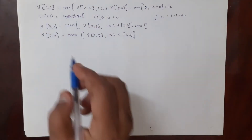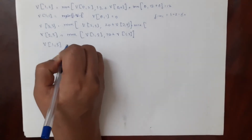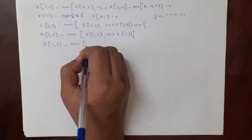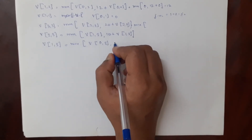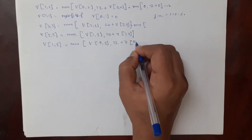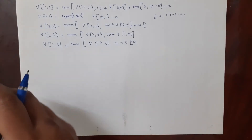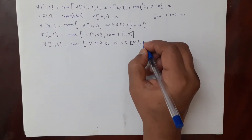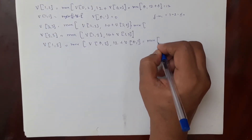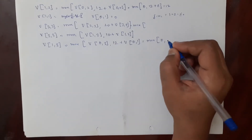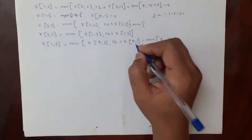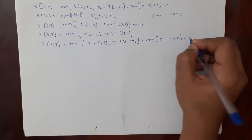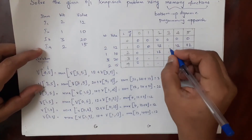We calculate v of 1 comma 3: maximum of v(0,3), or 12 plus v(0, j minus wi) = v(0, 3 minus 2) = v(0,1). From the table, 0 comma 3 is 0 and 0 comma 1 is 0. So v(1,3) = maximum of 0 or 12 plus 0 = 12. We fill entry 1 comma 3 with 12.